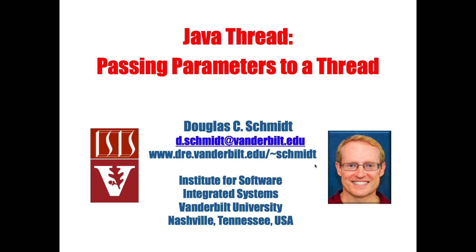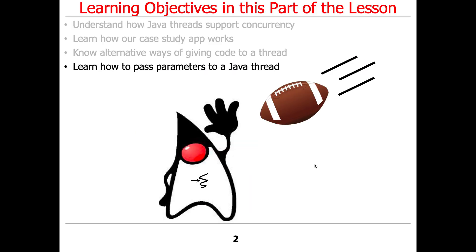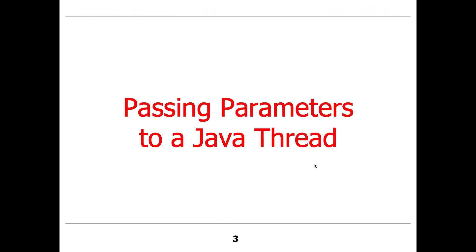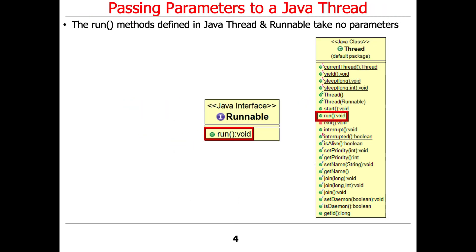Now that I've talked about ways to give code to a thread to run it, let's talk about ways to pass parameters to a thread. This actually turns out to be surprisingly tricky. When you first look at the interface for thread, you're like, how do you pass parameters to it? But it turns out you just have to know the patterns and the idioms for doing this properly.